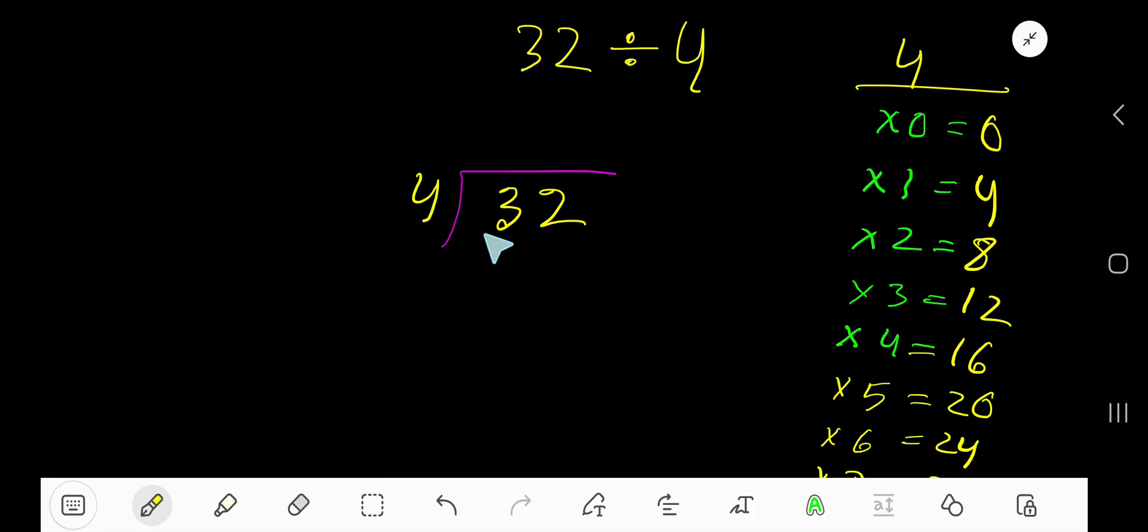Look, 4 goes into this 3 how many times? Since 3 is less than 4, 0 times. 0 times 4 is 0. Subtract 3. Bring down this 2.